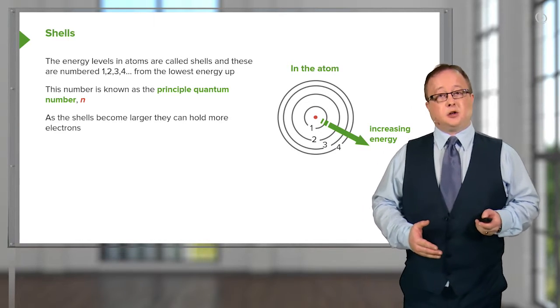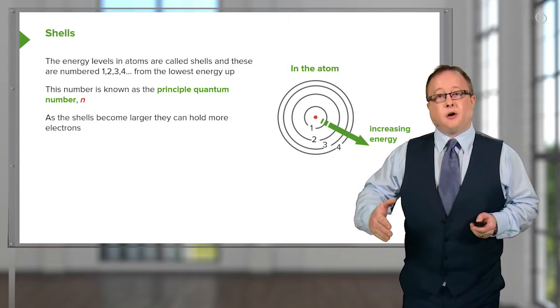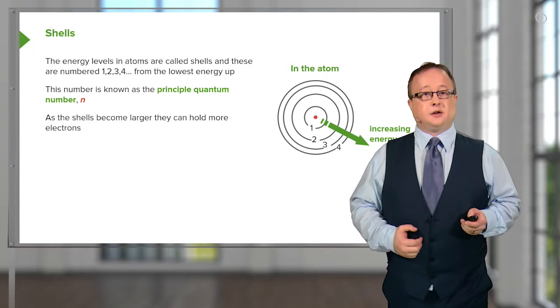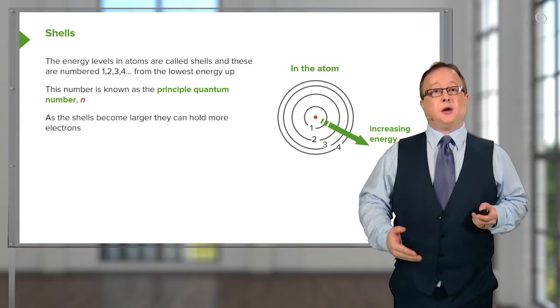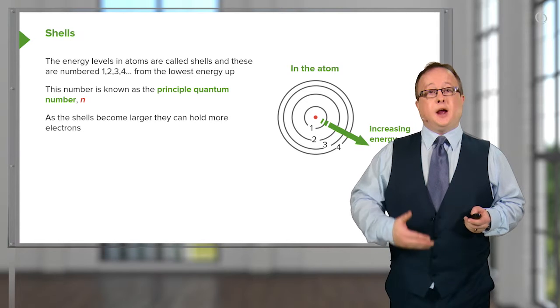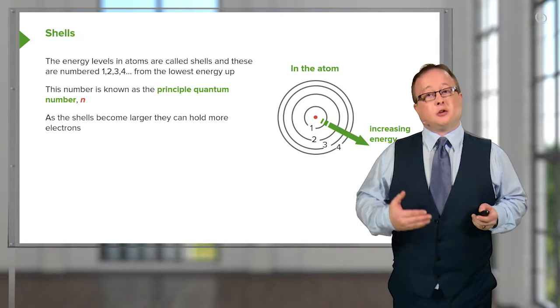As the shells become larger, as they move further and further away from the nucleus, we can see that they hold more and more electrons. We'll be going through the makeup of these shells in the next lecture when we start looking at orbitals.